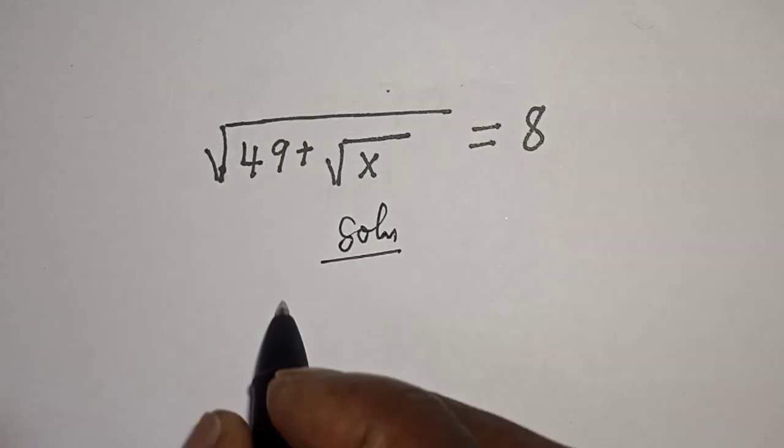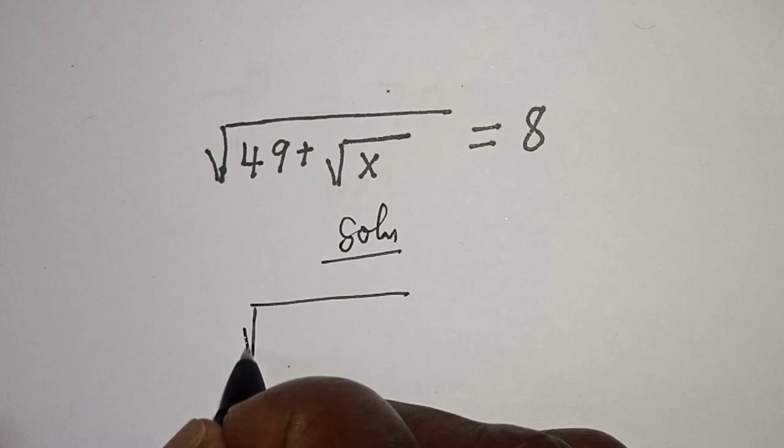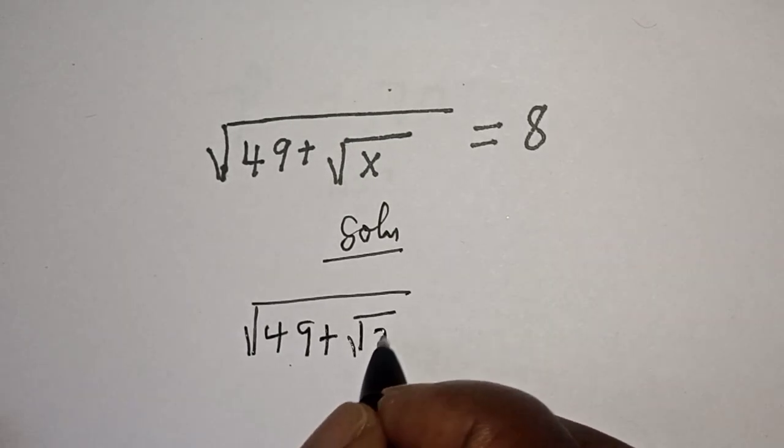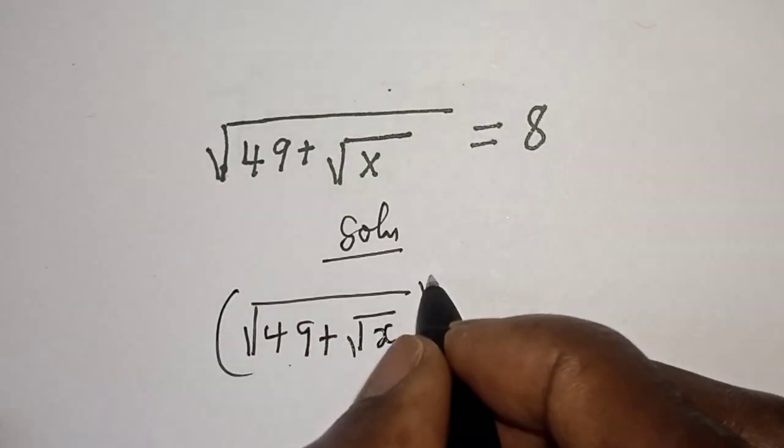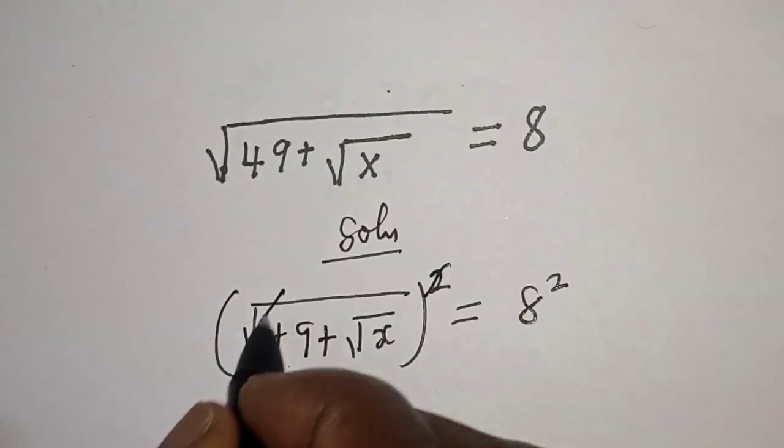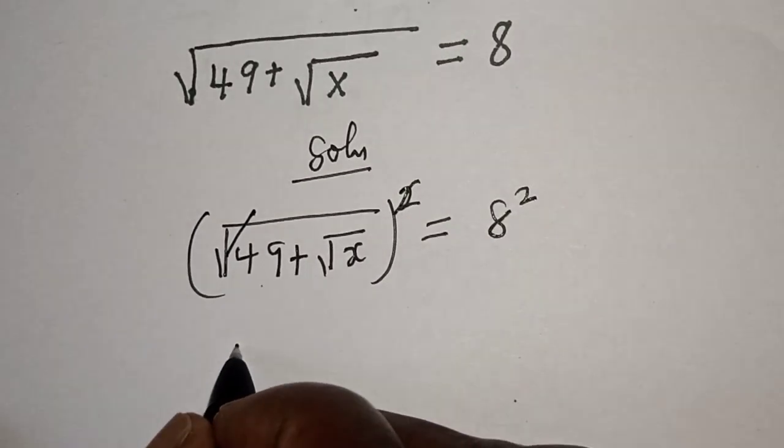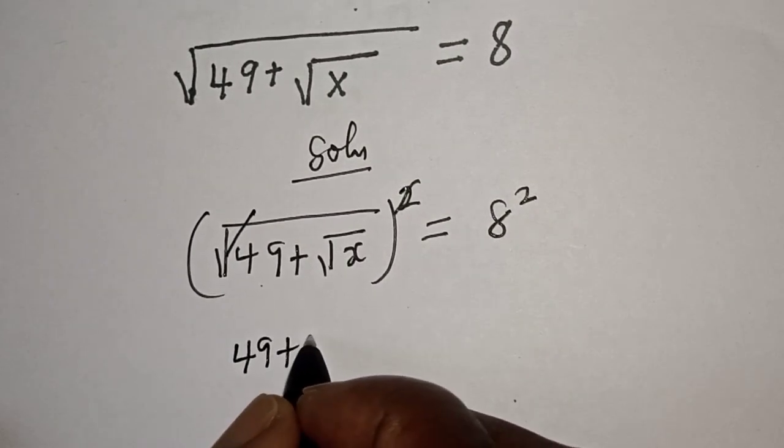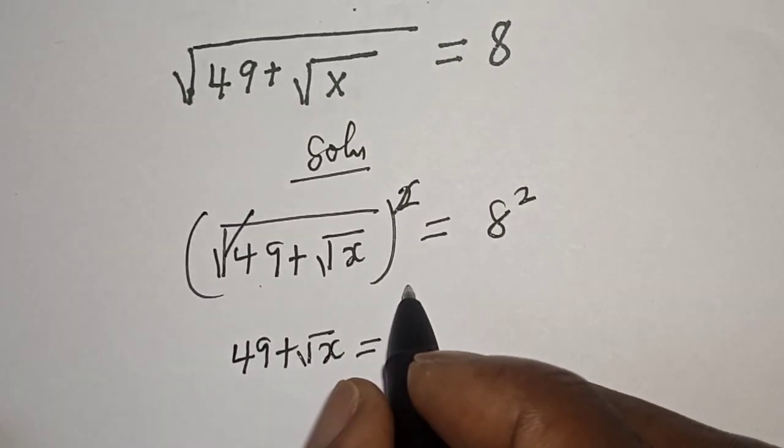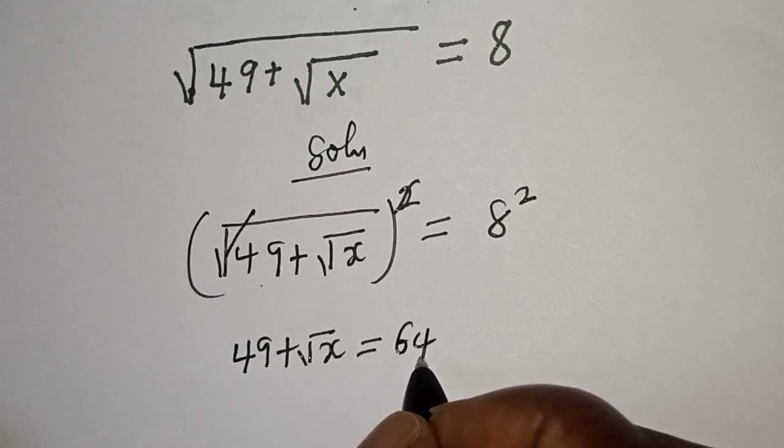Let's square both sides. Square root of 49 plus square root of S all square is equal to 8 square. So we will cancel this. We have 49 plus square root of S is equal to 8 square is 64.